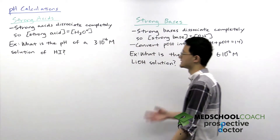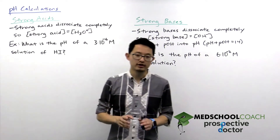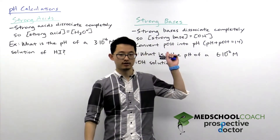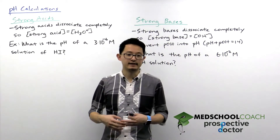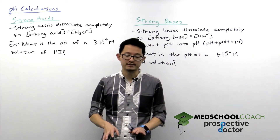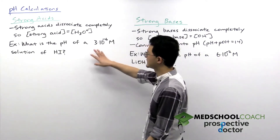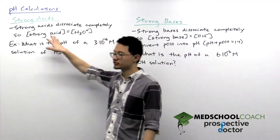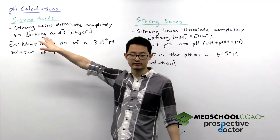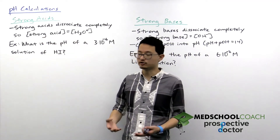Let's take a look at how we calculate the pH of strong acids and strong bases. We're starting with these because calculations of pH for strong acids and strong bases are easier than that for weak acids and weak bases — those are a bit more complex and we'll see how to do them in the next video. The nice thing about strong acids is they dissociate completely in solution, so whatever concentration of strong acid you have, you can assume that's the same as the concentration of hydronium ions in solution.